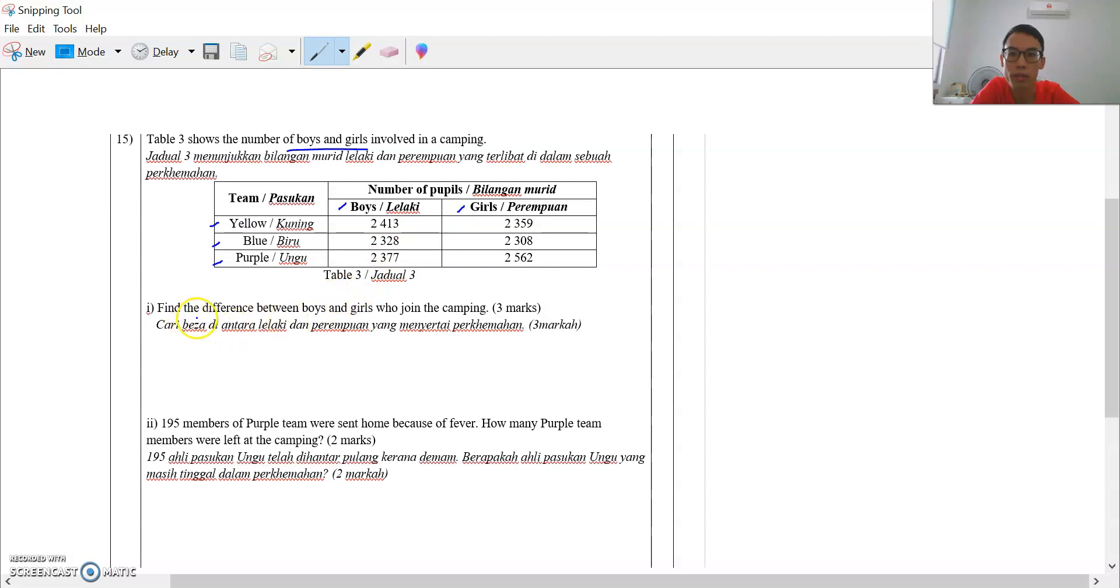Question 1: find the difference, cari beza between boys and girls who join the camping. Cari beza antara lelaki dan perempuan. When you see the word difference, find the difference, cari beza, you have to minus. So this question is giving you 3 marks.